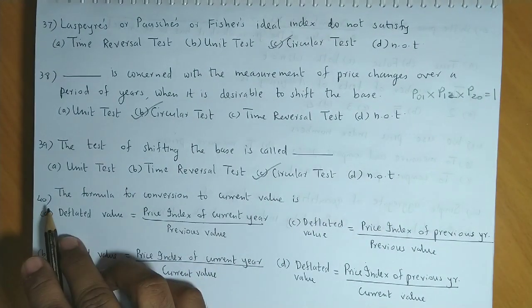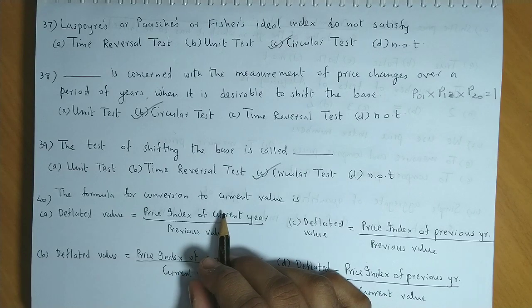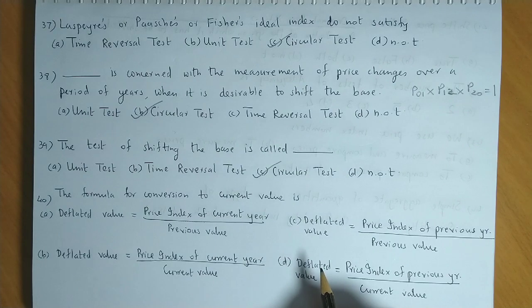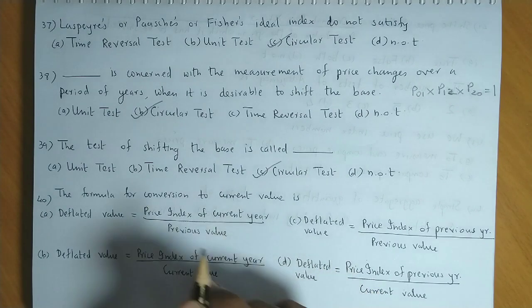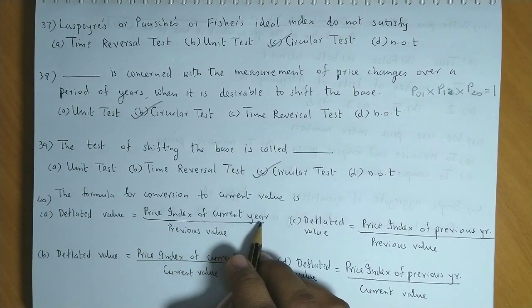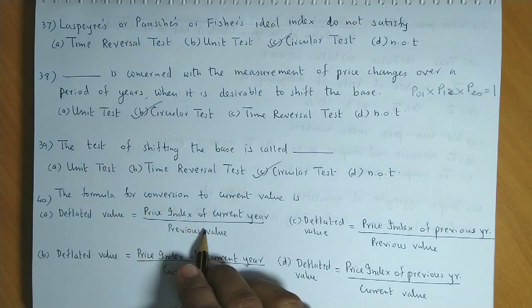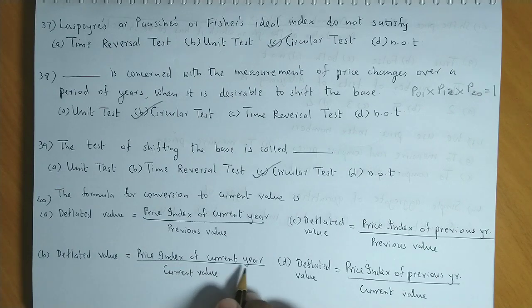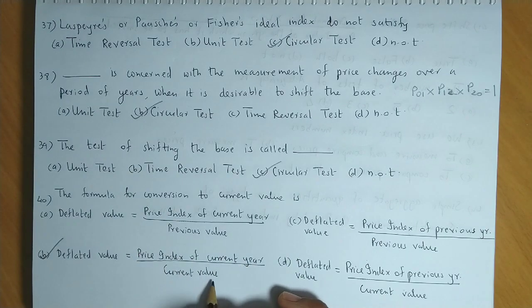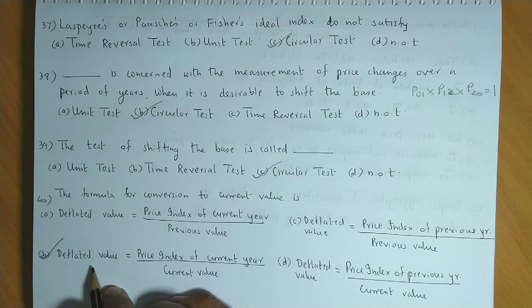Question number 40: The formula for conversion to current value is. Abhi yaha bhi deflated value ka formula poochha gya hai, which is the correct one. Deflated value is price index of current year upon the previous year, yeh galat hai. Deflated value is price index of current year upon the current value. So this is the right answer. The current year's price index upon the current price or the current value gives you the deflated value. So 40 ka answer hai option B.